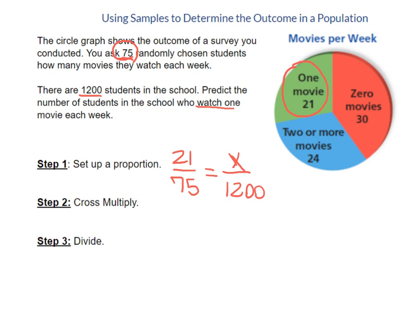Now we're ready for step two. Step two says to cross multiply. So I'm going to take the numbers 21 and multiply by 1200. If I type that into the calculator, I get 25,200.